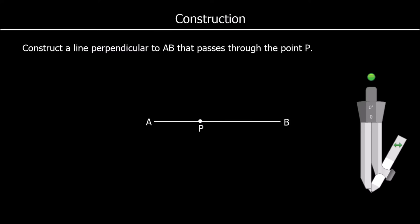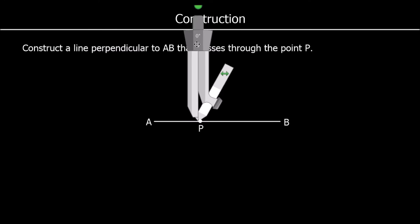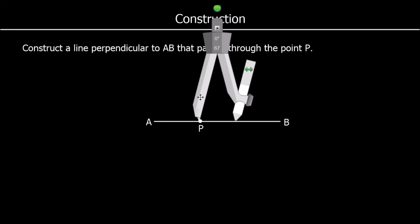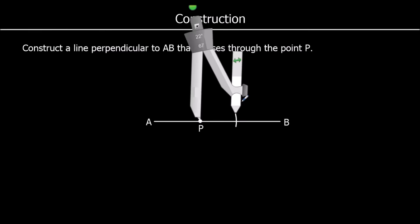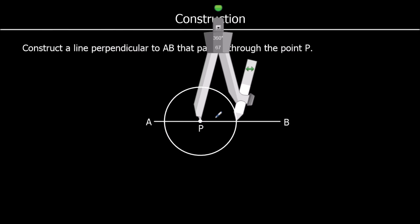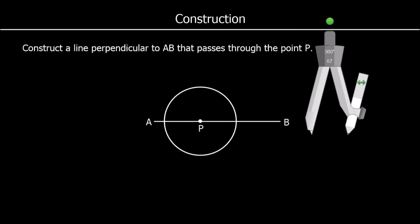This question says construct a line perpendicular to AB that passes through the point P. So it's got to go through the point P and it's got to be perpendicular to the line. We're using a compass again. I'm going to put my point on P and find two points an equal distance away from P by drawing a circle.